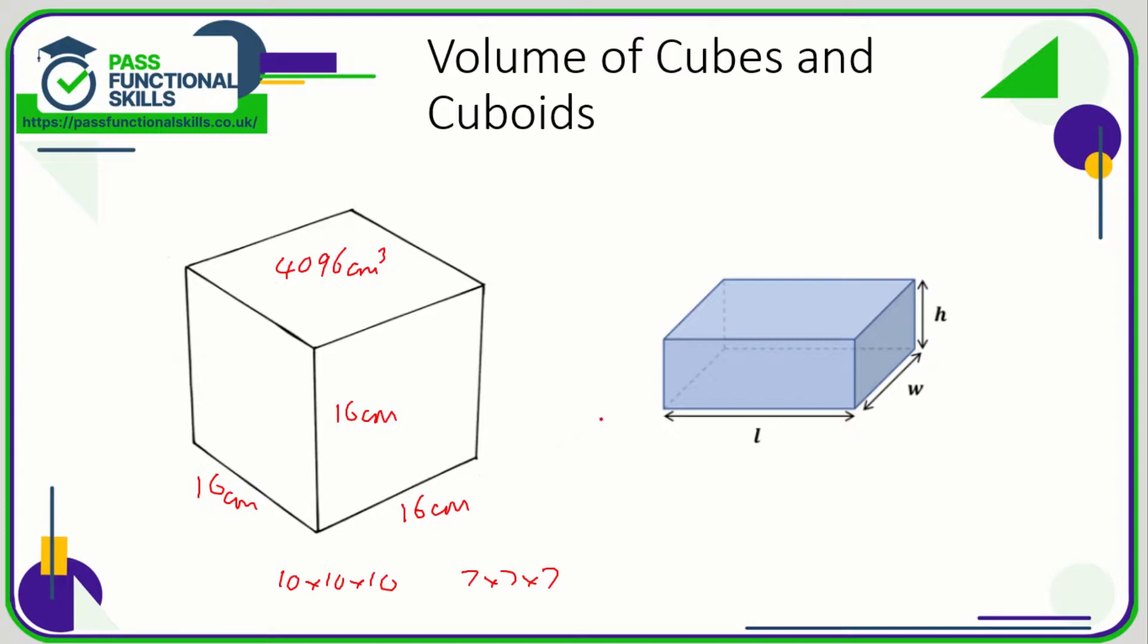Now for a cuboid, the formula for the volume of a cuboid is the length times the width times the height. So if we have a cuboid 10 centimeters, 6 centimeters, and 4 centimeters, then our calculation is 10 times 6 times 4, which is 240 cubic centimeters.